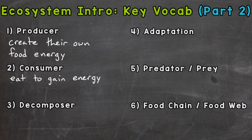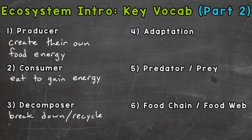Number three, we have decomposer. Decomposers break down dead organic material and waste and then recycle those nutrients back into the soil. Fungi and earthworms are a couple of examples of decomposers.